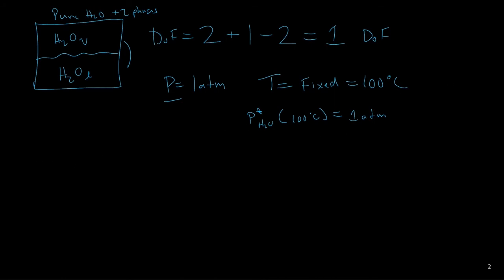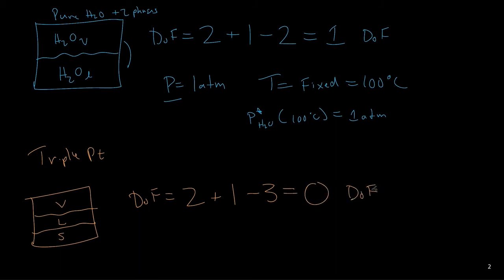If we look at the triple point of a material, we'll recall that in the triple point, we have three different phases all existing at the same time: solid, liquid, and vapor, but it's only for a pure component. So if we look at the degrees of freedom, we have 2 plus 1 component minus 3 different phases, which gives us 0 degrees of freedom. The triple point is defined strictly by the material properties, and as a design control, we don't have any ability to move that by modifying the temperature and pressure.